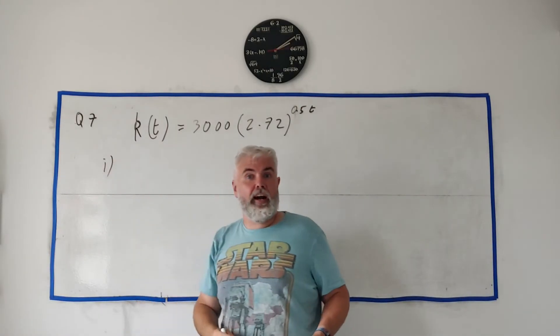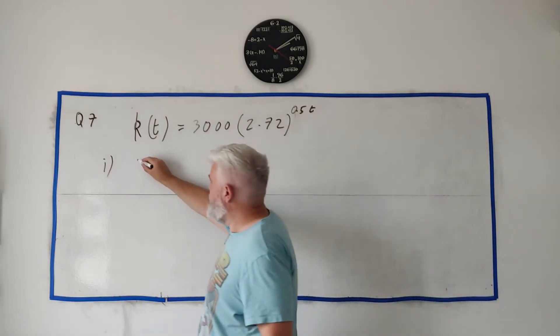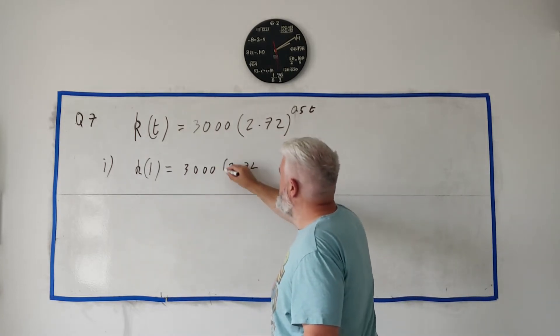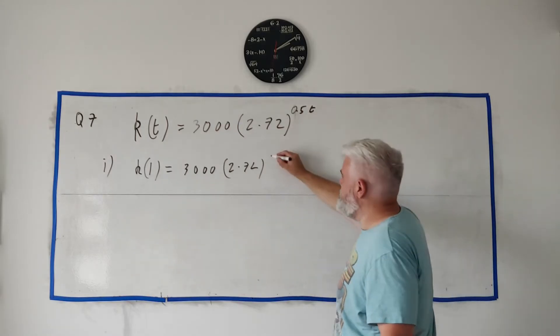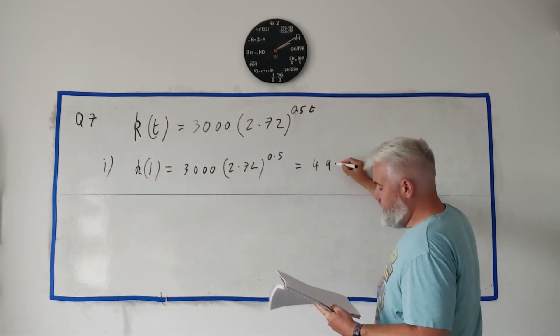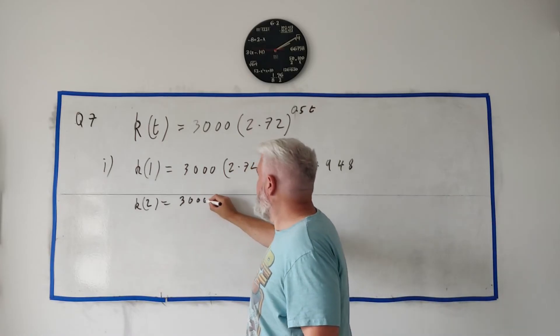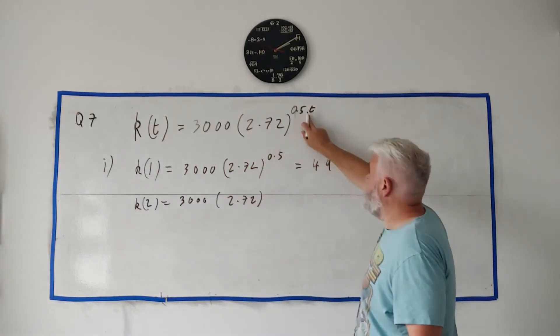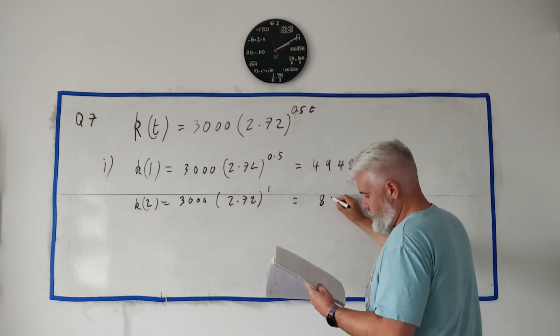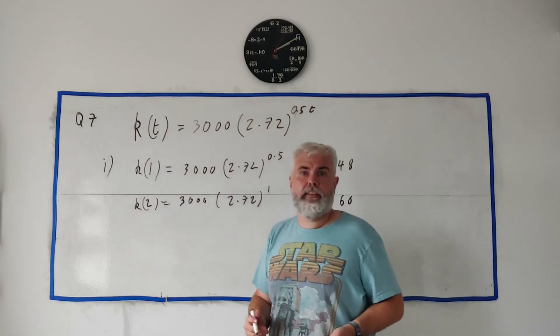In part one they want us to find out how many bacteria there are after 1 hour and after 2 hours. So we simply put 1 in here: k(1) equals 3000 multiplied by 2.72 to the power of 1 times a half. What's 1 times a half? 0.5. Put this in a calculator and you will get 4948. Do the same for 2 hours: k(2) equals 3000 times 2.72 to the power of 2 times a half is 1. Put that into a calculator and you will get 8160. I'm rounding these off to the nearest whole number. That's the answer to part one.